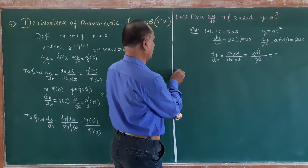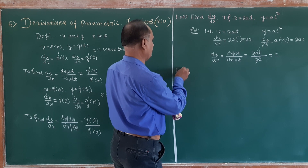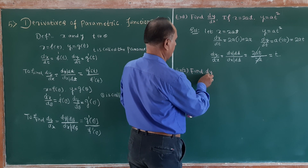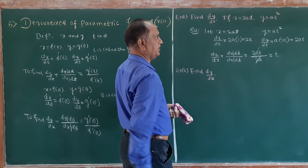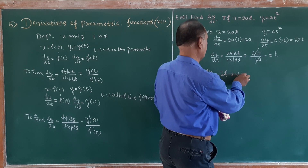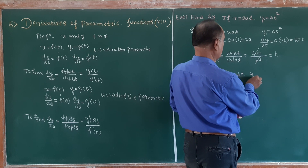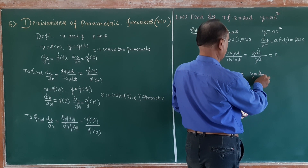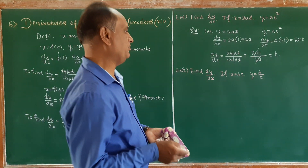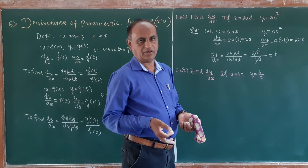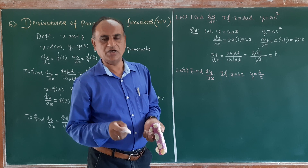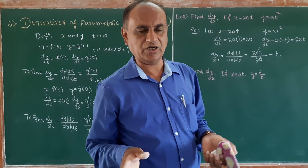Another example, example number 2: find dy/dx if x is equal to 4t and y is equal to 4 divided by t. Here t is the parameter, so differentiate with respect to t.